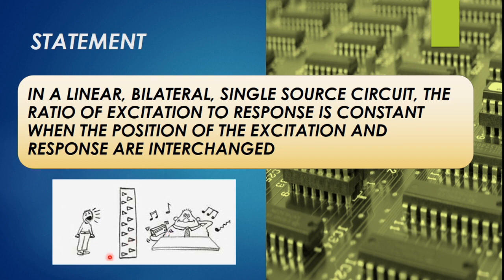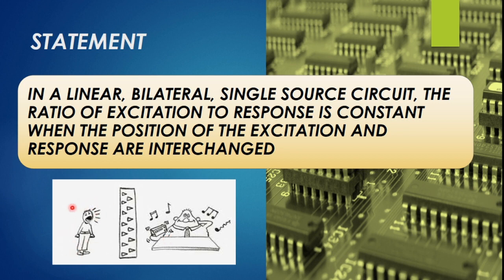Now try interchanging the position of the source and the receiver. If he shouts from the other side too, the wall is going to stop the voice. So wherever the source and response are placed — in this manner or interchanged — the output remains constant. That is what we mean by reciprocity theorem, and single source means only one person is shouting.